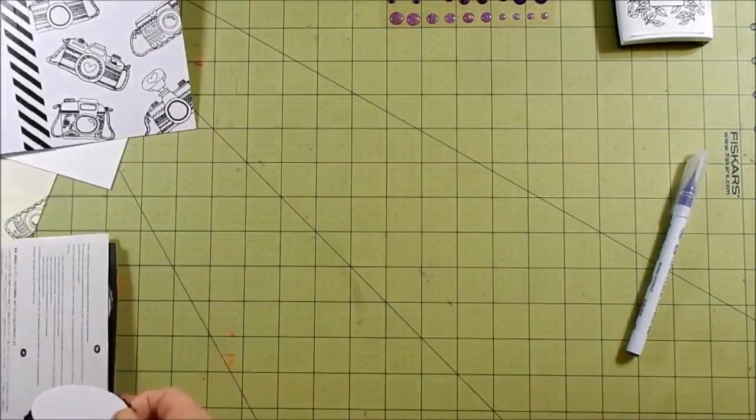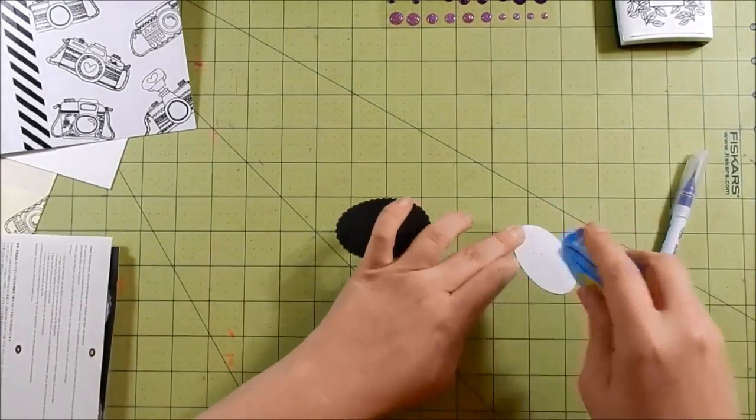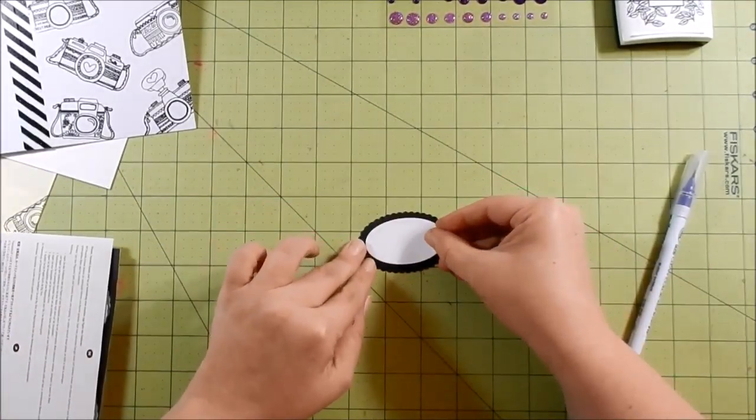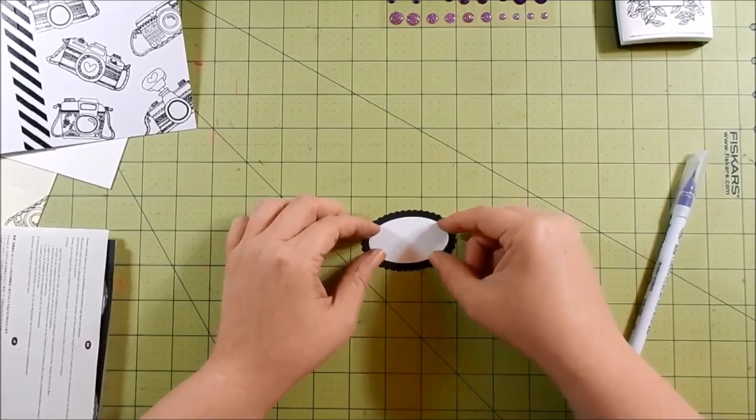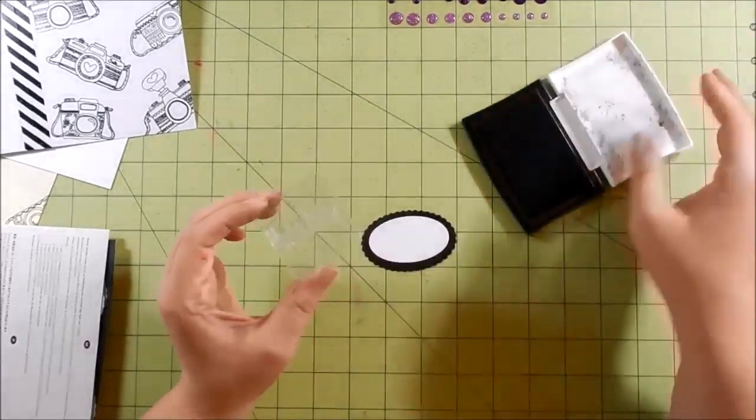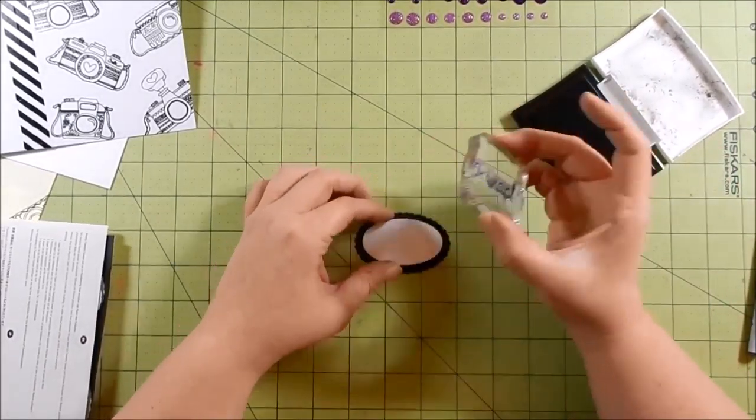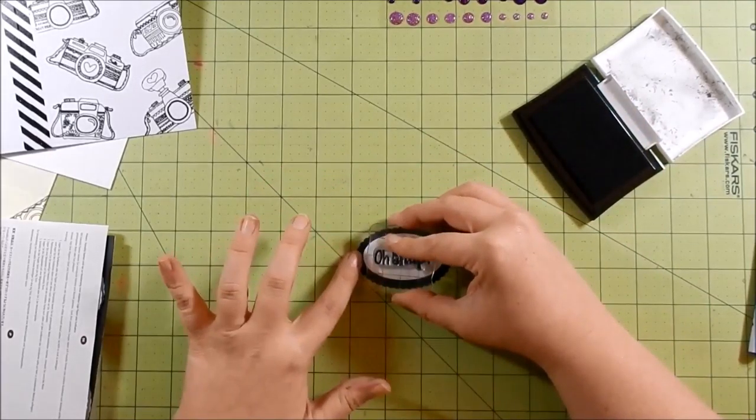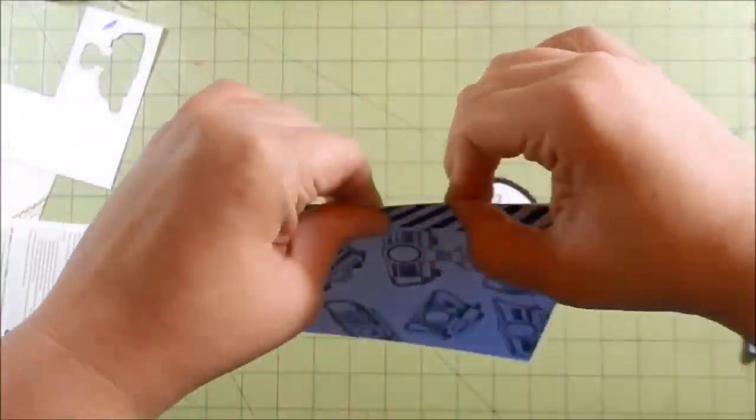I have this scallop oval, and these are from Stampin' Up. I went ahead and cut a piece of black in the scallop and then a piece of white in the oval shape. I'm going to stamp my sentiment—it says 'oh snap.' I wanted a nice black and white card with a pop of color.